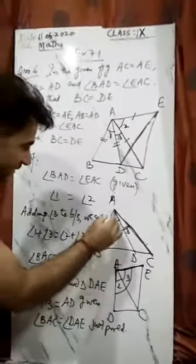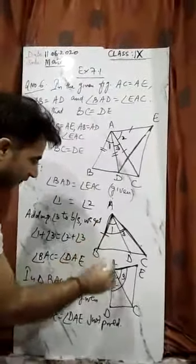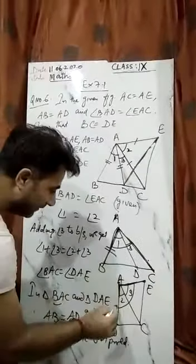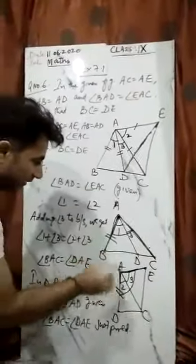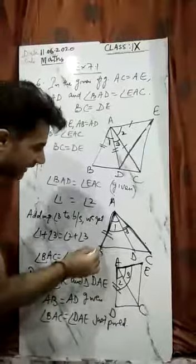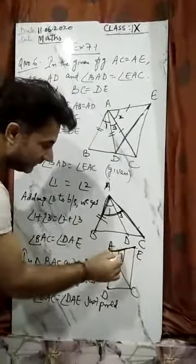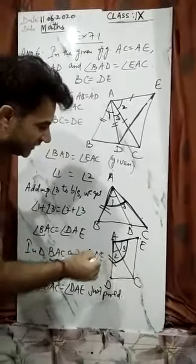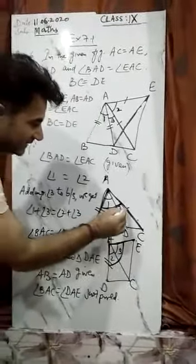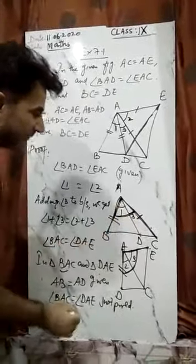And the third thing, this triangle's AB was equal to this triangle's AD. AB and AD, then this triangle's angle BAC is equal to angle DAC of this triangle.